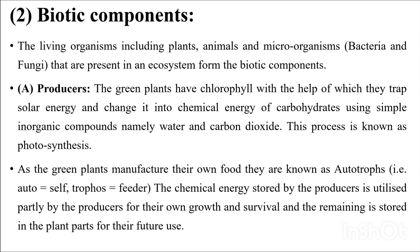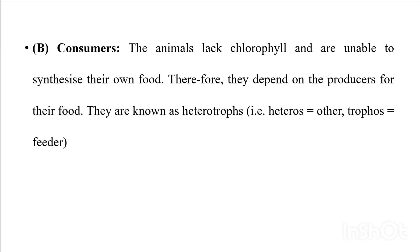Producers are green plants that have chlorophyll, and with that chlorophyll they trap solar energy and change it into chemical energy of carbohydrates using simple inorganic raw materials — for example, water and carbon dioxide — in the process of photosynthesis. As green plants manufacture their own food, they are known as autotrophs. The chemical energy stored by producers is utilized partly for their own growth and survival, and the remaining is stored for future use.